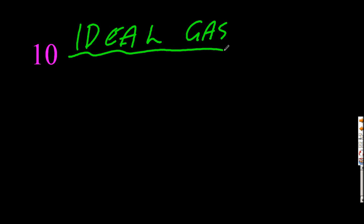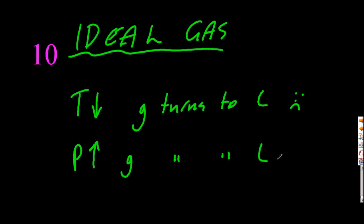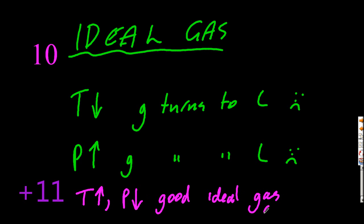Number 10. Okay, ideal gas conditions. Think about it. If I've got a low temperature, my gas is going to want to turn to a liquid. So that's bad. And if I have a high pressure, my gas is going to want to turn to a liquid. And that's bad. So high temperature, low pressure. That's good, ideal gas conditions.